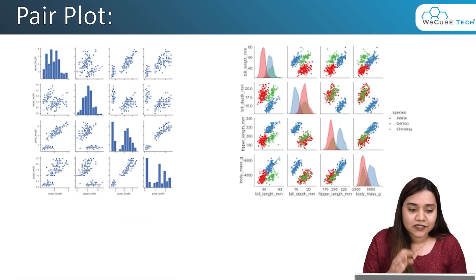Hello everyone, a very warm welcome to WS Cube Tech. In our previous session we covered violin plots. In today's session we will be starting with a new plot called a pair plot. A pair plot is a combination of scatter plot and histogram plot where pairs are created in different forms. Let's have a look at how a pair plot looks.